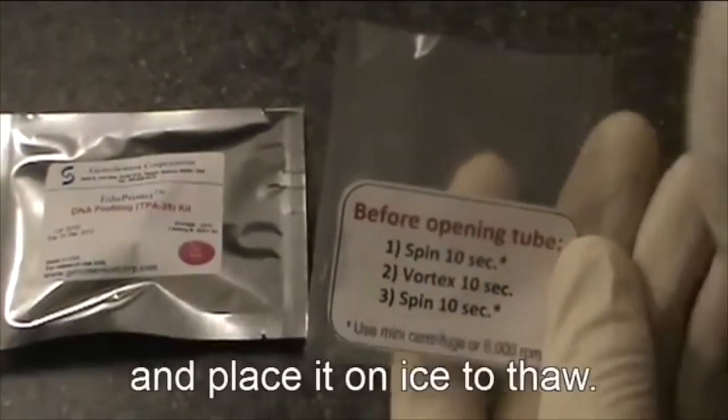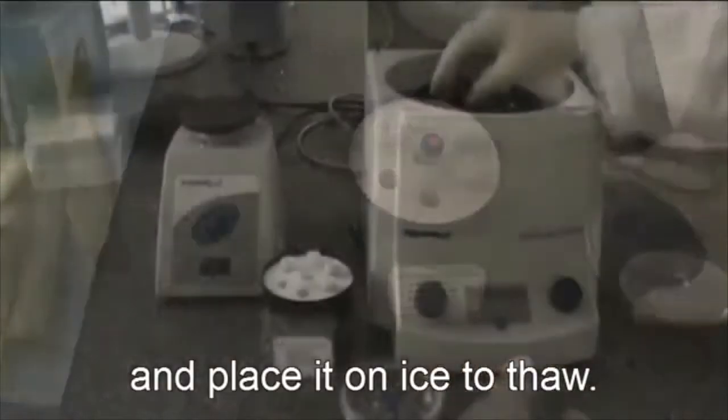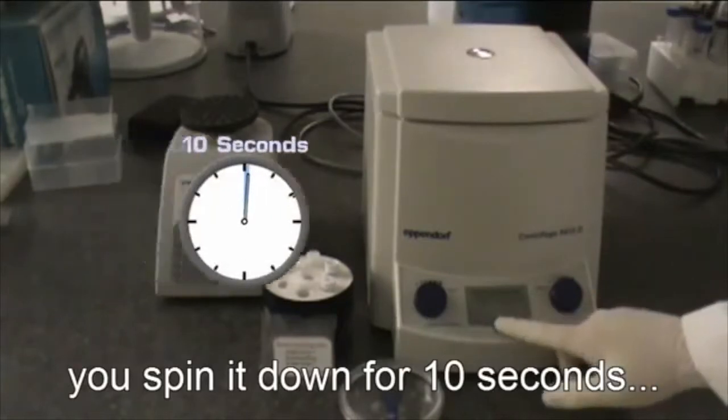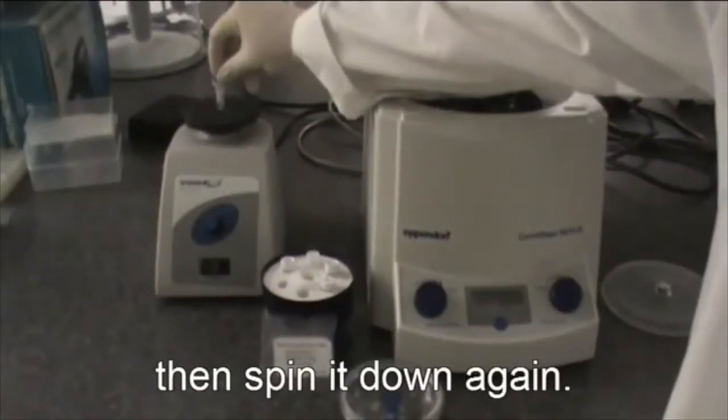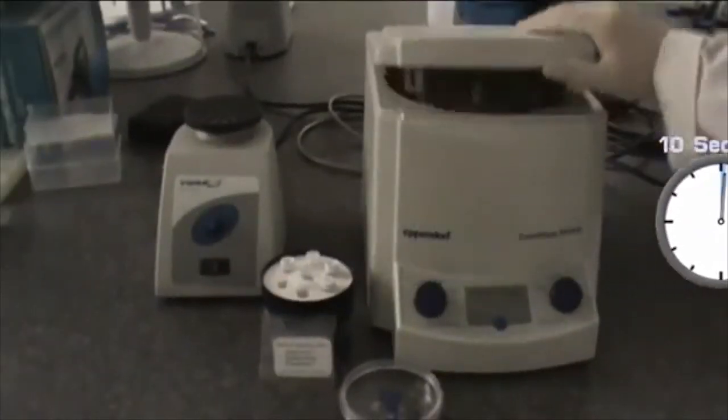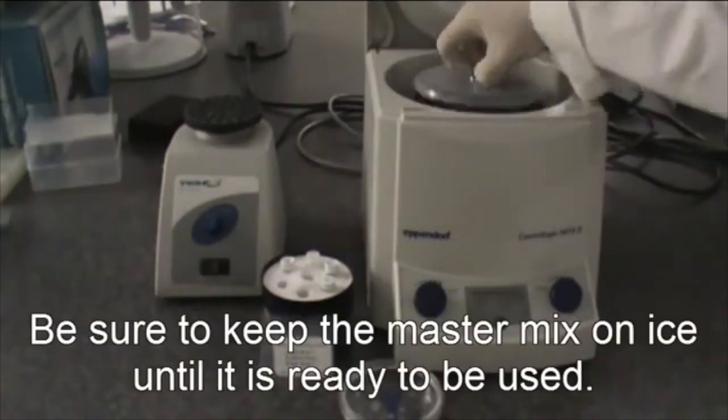Remove the PCR master mix from the aluminum bag and place it on ice to thaw. Once it is thawed, it is vital that before opening the tube, you spin it down for 10 seconds, vortex it, and then spin it down again. Be sure to keep the master mix on ice until it is ready to be used.